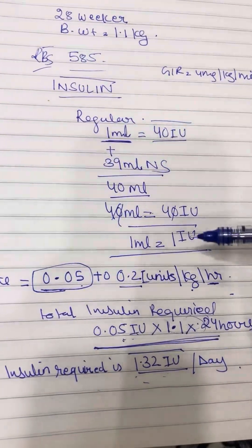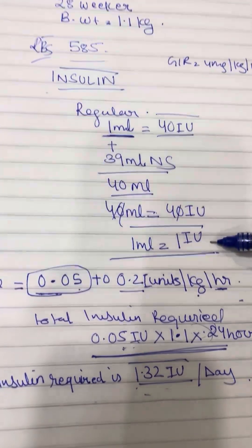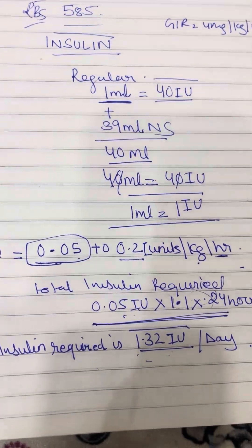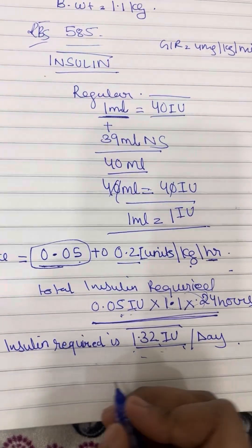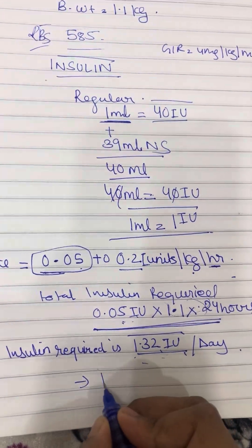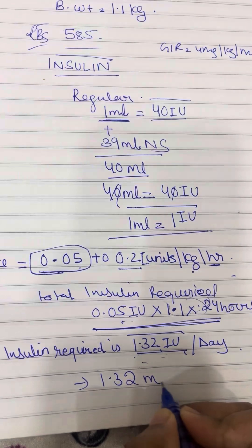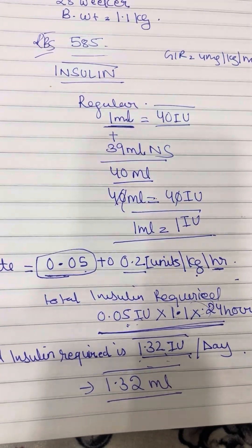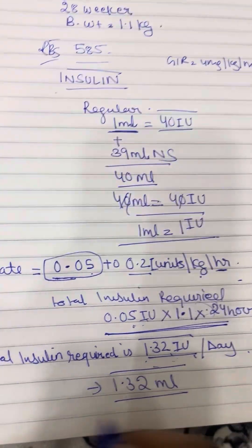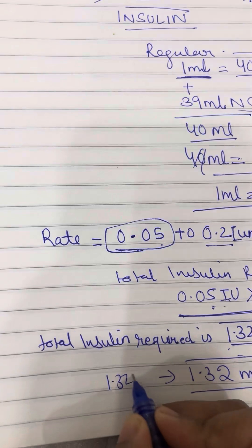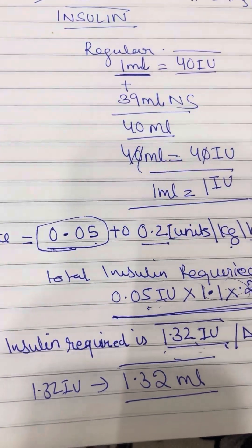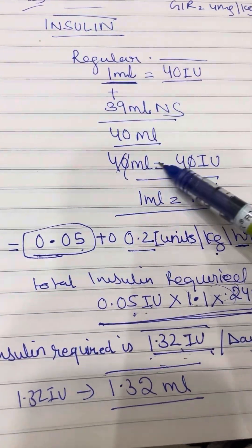By my dilution, I know 1 ml is equal to 1 international unit. So if I have to give 1.3 international units in a day, that means I have to give 1.32 ml of insulin in a day. 1.32 international units equals 1.32 ml.